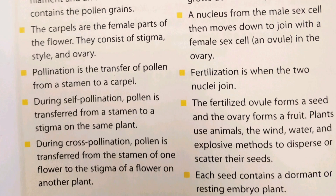Plants use animals, wind, water, and explosive methods to disperse or scatter their seeds. Each seed contains a dormant or resting embryo plant. All these basic facts are to be learned because they will improve your understanding and your learning outcomes.